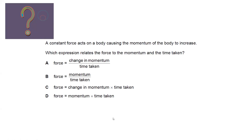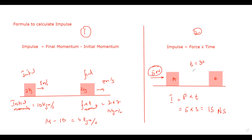With the second formula of impulse: when a force is applied on an object for a certain time interval — like 3 or 5 seconds — and you need to calculate impulse, multiply the applied force by the duration for which it is applied. Unit of force is Newton and unit of time is second, so 5 multiplied by 3 equals 15 Newton seconds.